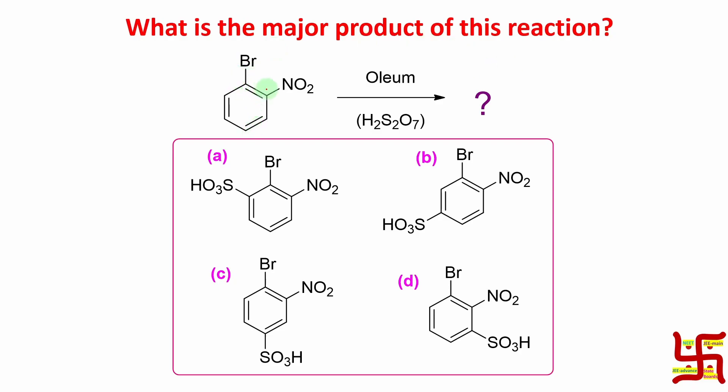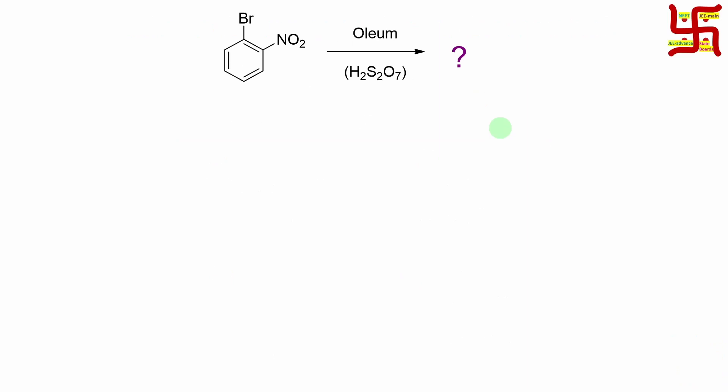What is the major product of this reaction? So here you can see bromo and nitro in one-two position treated with oleum. What is the product? Now, by the way student, this problem is actually about the selectivity and first of all, influence of the group.